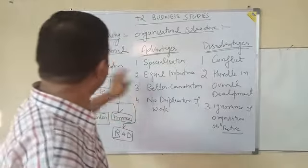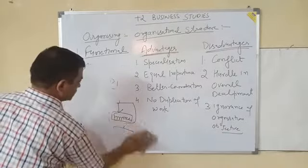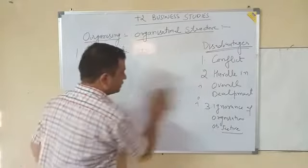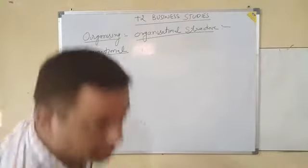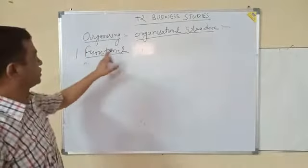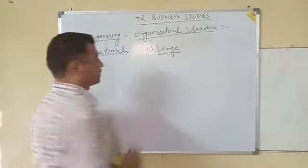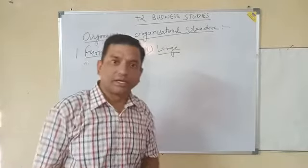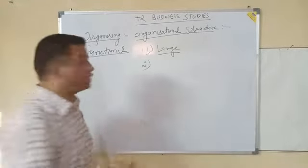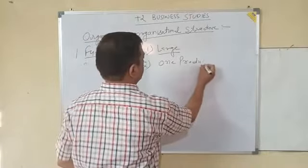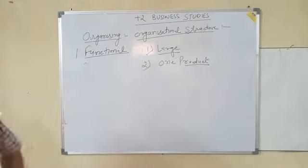Now we will discuss in which type of situation the functional type of structure will work best. The very first situation is when the company is really large — if the company's scope and working is really large, then functional structure is really good. Second, when the company is producing only one product — if the company is dealing with only one product, then this type of structure is really suitable.